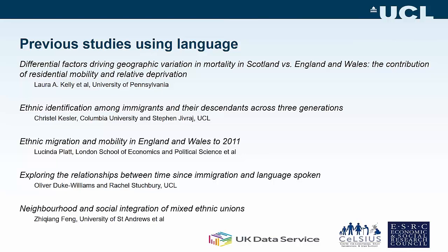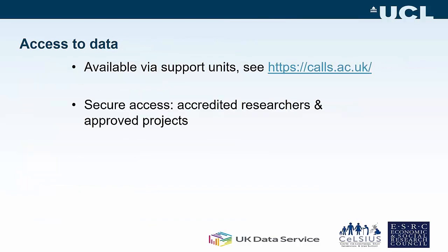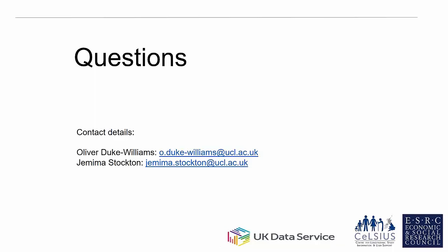Jemima shows examples of previous studies using language data from the longitudinal studies, including work on differential factors driving geographic variation in mortality in Scotland versus England and Wales, ethnic identification amongst immigrants and their descendants across multiple generations, ethnic migration and mobility, immigration and language spoken, and neighbourhood and social integration. If you want to use the LS data — not just the LS in England and Wales, but also in Scotland and Northern Ireland — you can go to calls.ac.uk, which has information about all three studies.